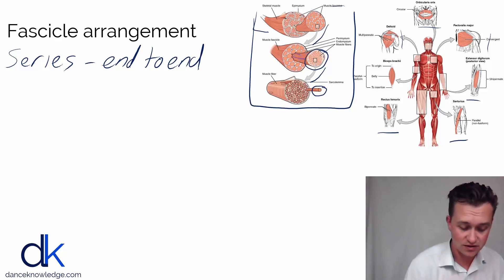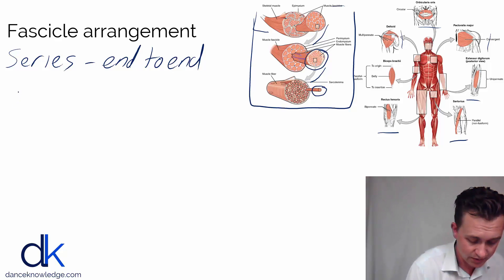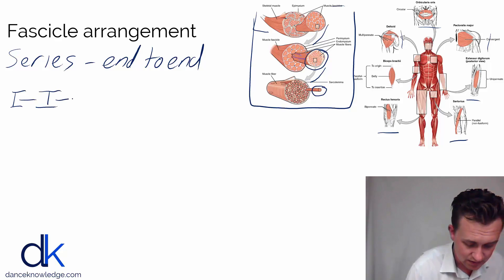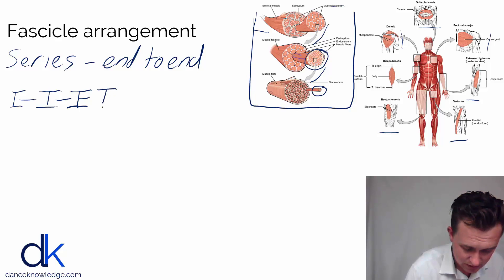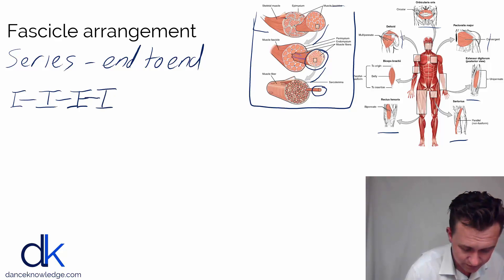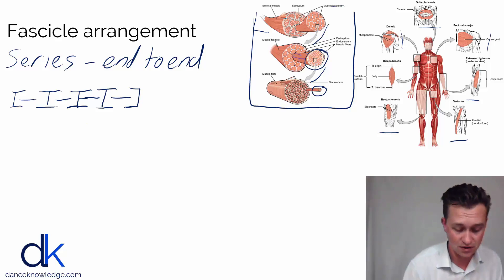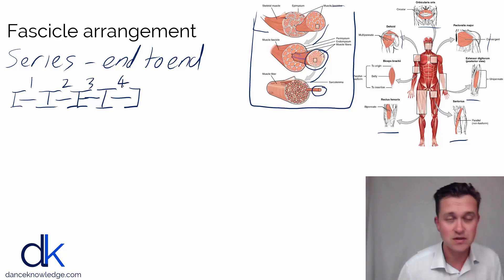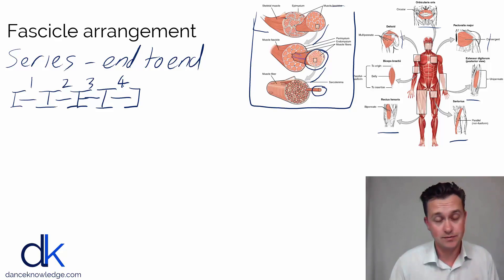If I were to draw some sarcomeres in series — let's draw four sarcomeres in series — we'd have the first actin filament with myosin in the middle, then the second sarcomere, then the third sarcomere, and then the fourth sarcomere. So we've got one, two, three, four sarcomeres in series with one another.